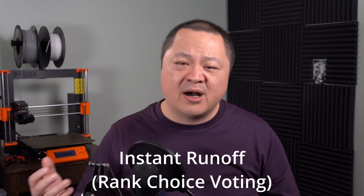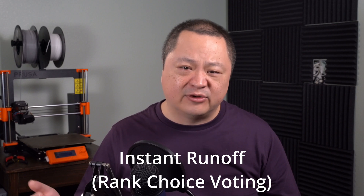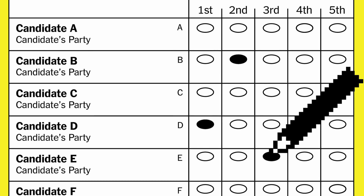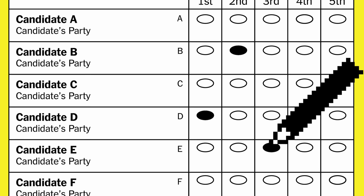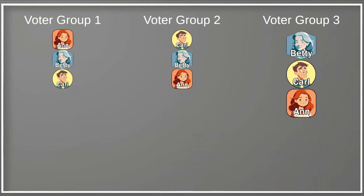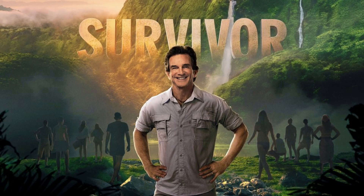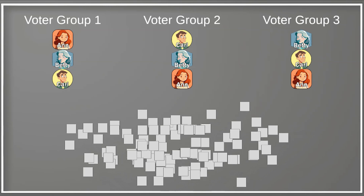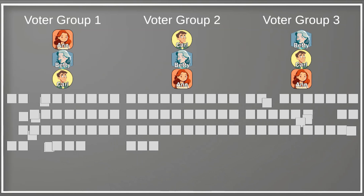The second rule set is called instant runoff, which in modern politics is commonly referred to as ranked choice voting. In instant runoff, voters have the opportunity to rank their candidates, providing a preference order. Then multiple rounds of voting are done in which the candidate with the least votes each round is eliminated, just like the TV show Survivor. The 'instant' part of the name comes from the fact that the rounds can all be performed instantly since the preference order of each voter is already known.